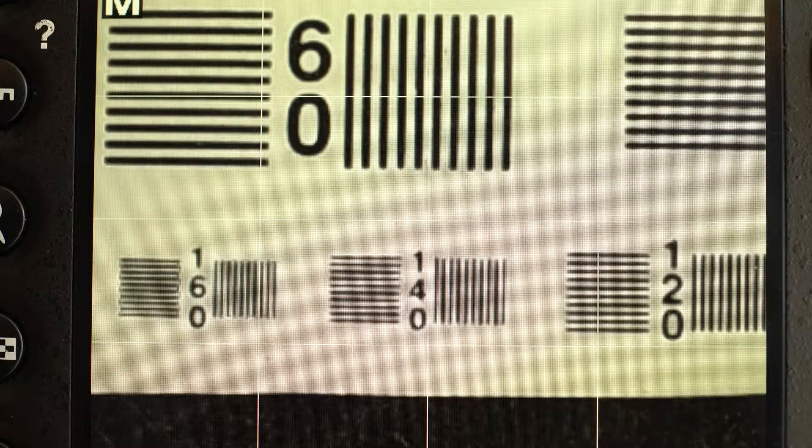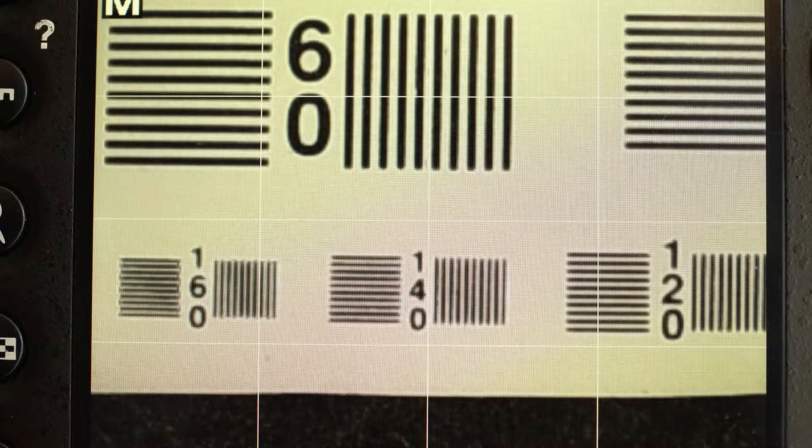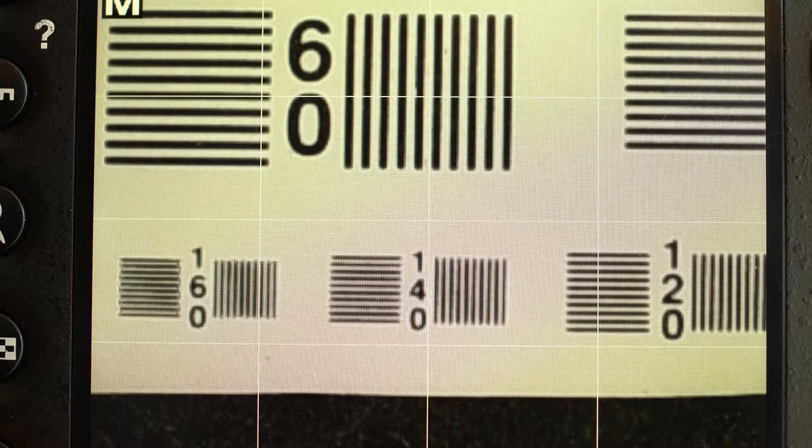This is Lloyd Chambers at digloid.com. Let's take a look at diffraction. Diffraction is a blurring that occurs when you stop down a lens.